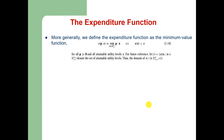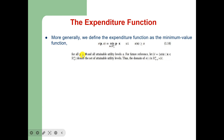More generally, we define the expenditure function as the minimum value function: E(P, U) = min expenditure such that the utility of bundle X is greater than or equal to U, for all strictly positive prices and all attainable utility levels U. Let U be a function of X such that the consumption bundle X is in non-negative R-N commodities, and denote the set of attainable utility levels as the range of E.